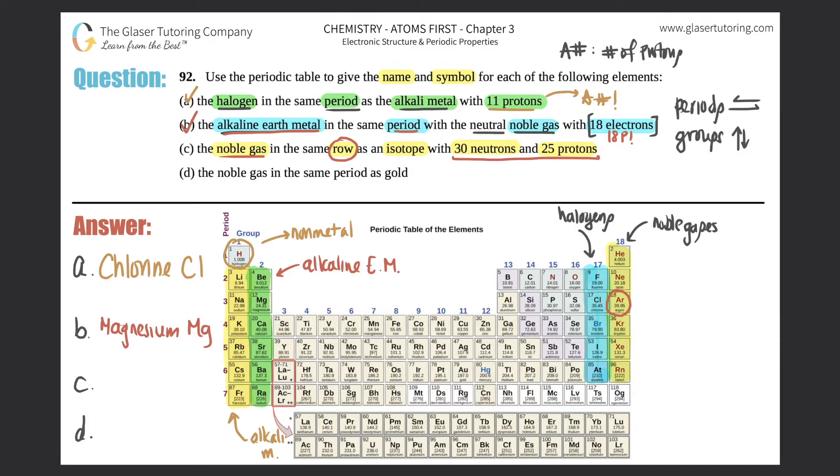The atomic number is always equal to the number of protons. I don't even care about the number of neutrons - that's not going to tell me anything about what the element actually is. But the protons will tell me. This one has 25 protons, so I have to scan the periodic table to find that 25 is manganese, right here.